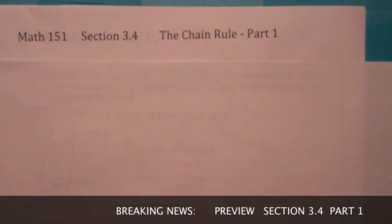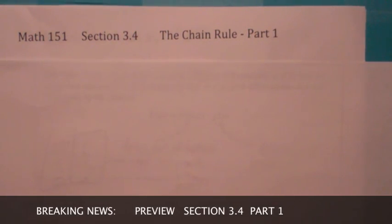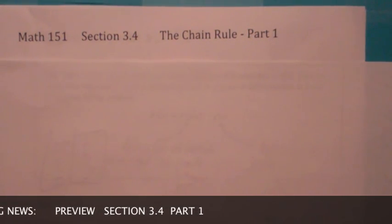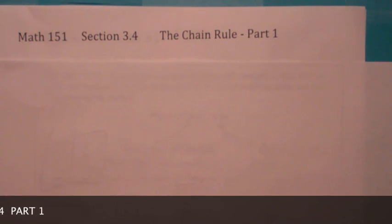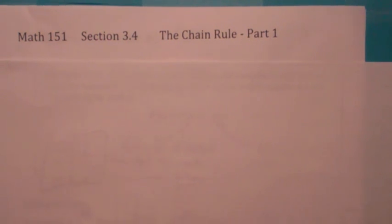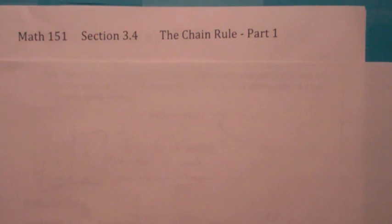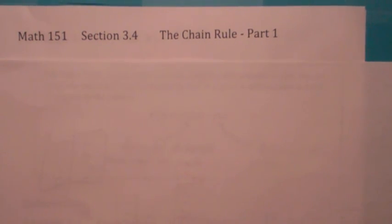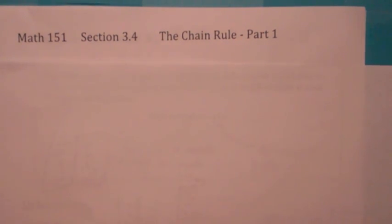We're going to begin our discussion on the chain rule, which is the most important differentiation rule because it tells us how to differentiate the composition of two or more functions. There are really two parts to the chain rule, and we're going to just do part one today, the easier of the two versions, and then in part b we'll talk about the more subtle one.